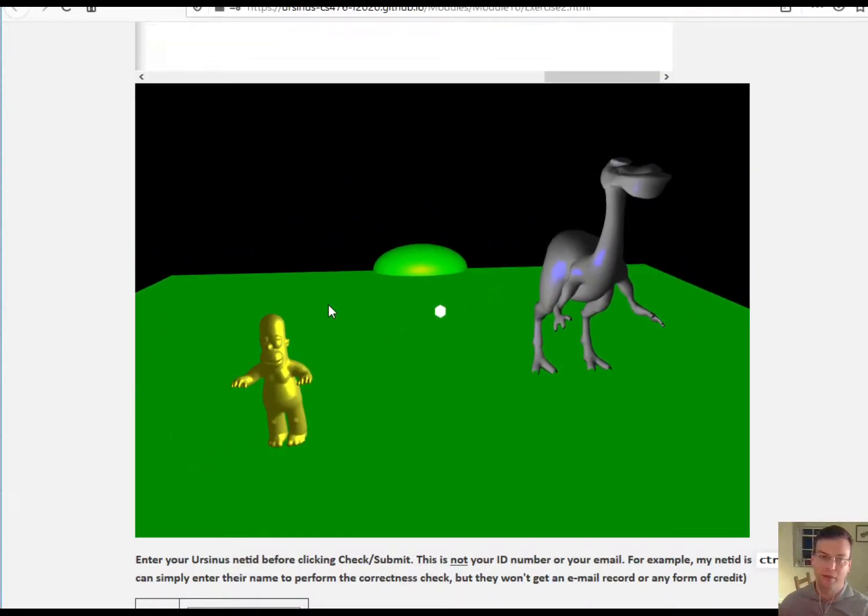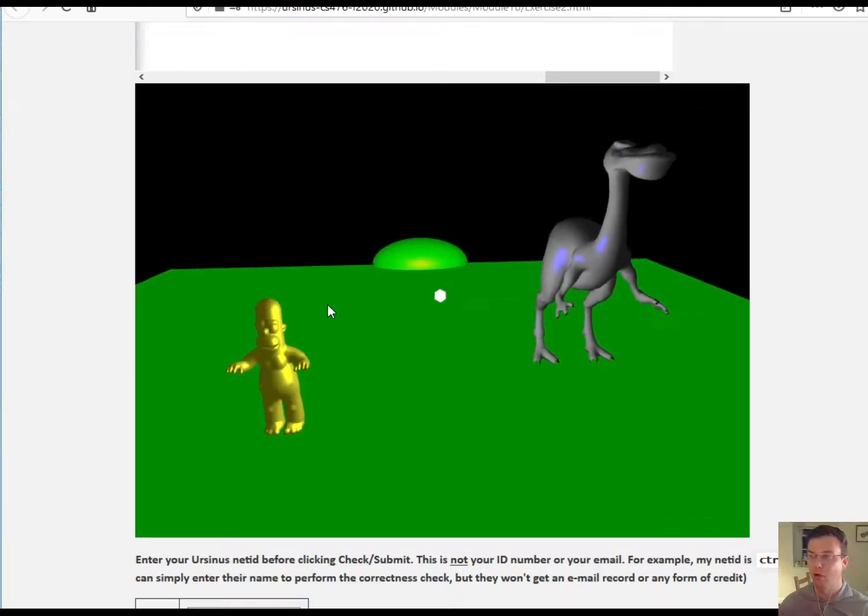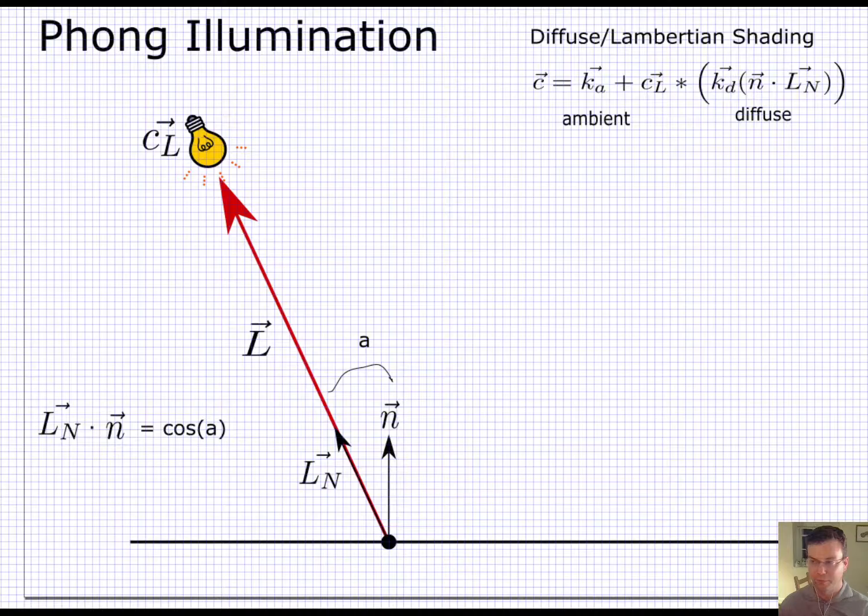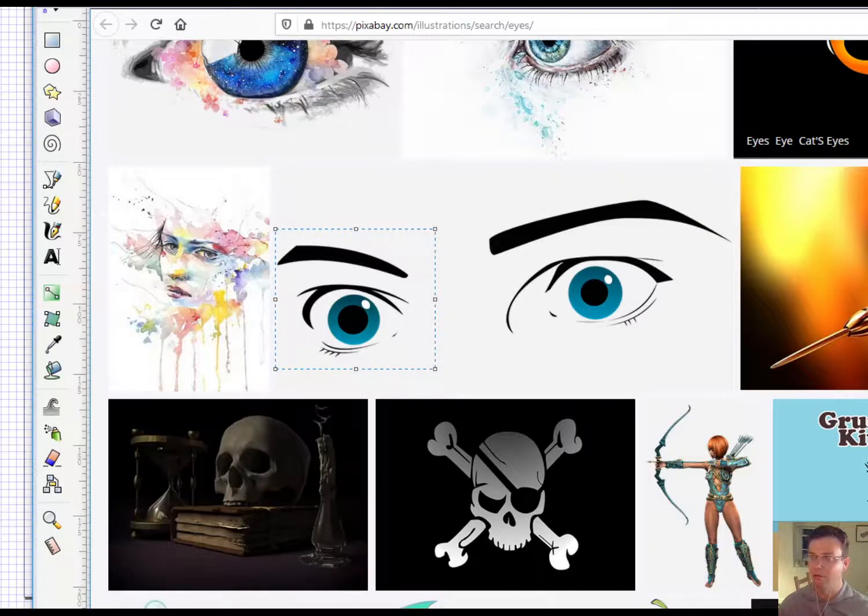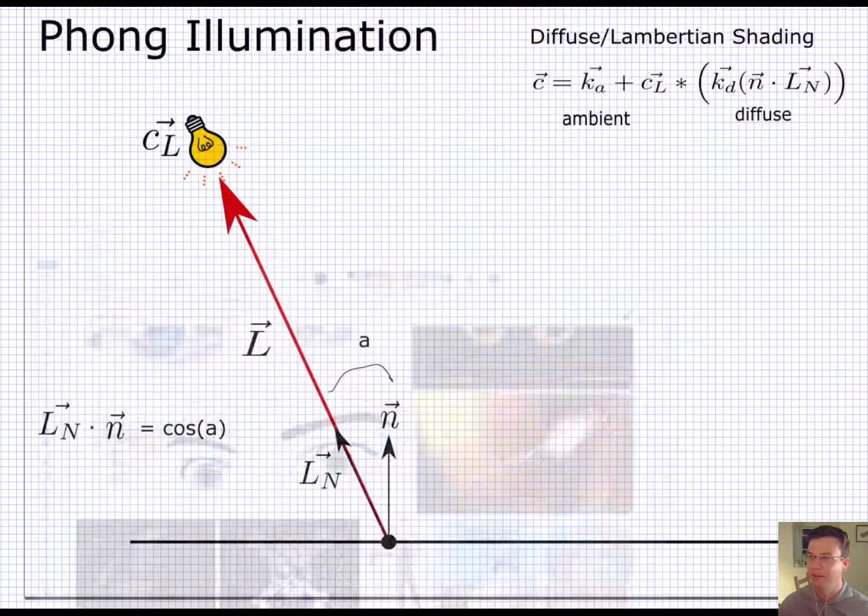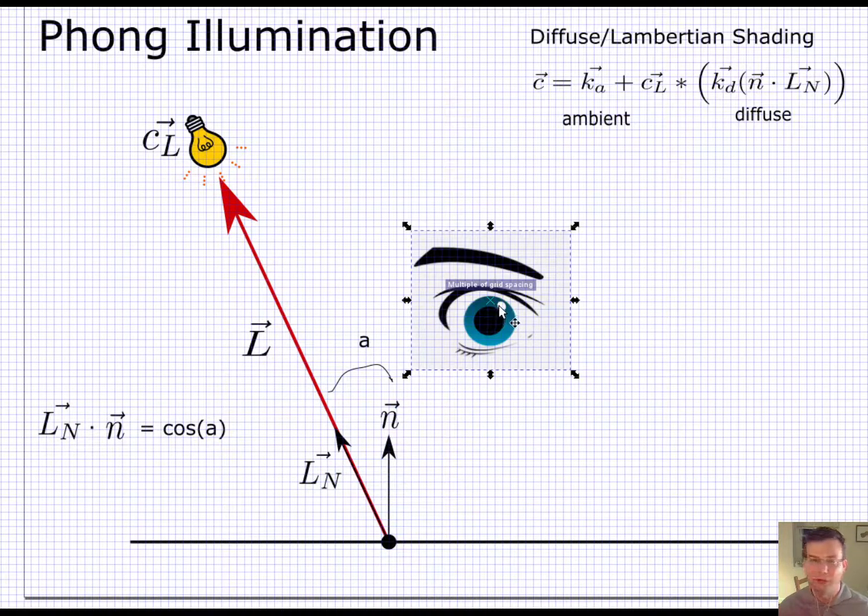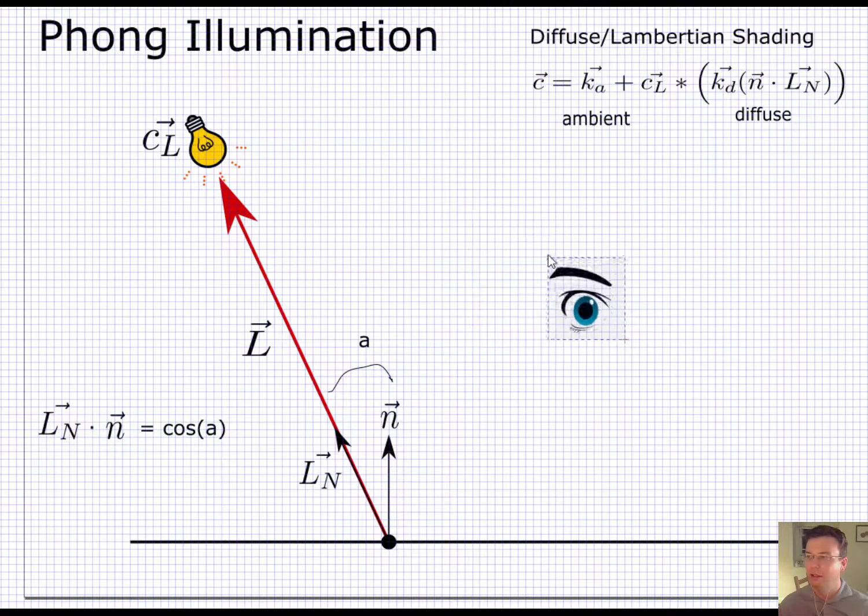So we're going to talk about a basic model for making things shiny called Phong Illumination. And so now we have to consider the effect of an eye. So here I've chosen a little eye picture that I'll use from Creative Commons.